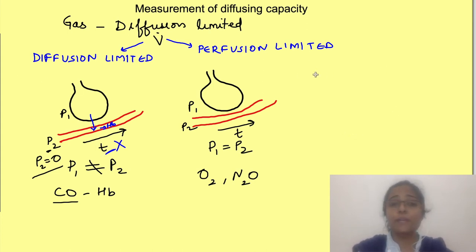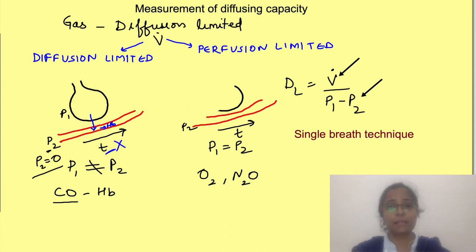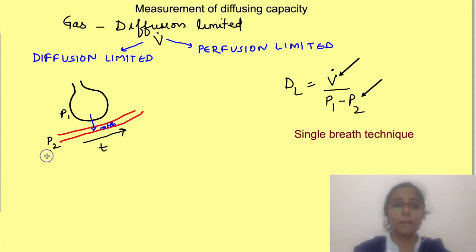So to measure diffusion capacity of lungs for carbon monoxide using this formula we need to know rate of diffusion of gas and its partial pressure gradient. For this single breath technique is used. In this the person first exhales maximally and then inhales maximally a dilute mixture of carbon monoxide containing approximately 0.3% carbon monoxide which is diluted with helium. He then holds the breath for 10 seconds to allow for diffusion of gases and then exhales.